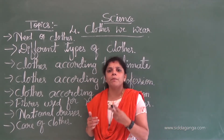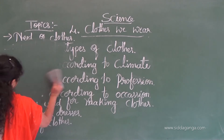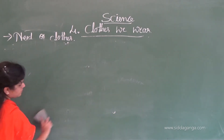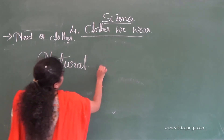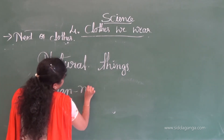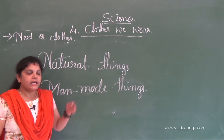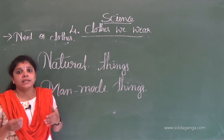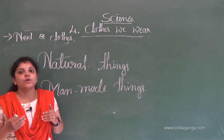We can classify all things on earth into two main groups: the first one is natural things, and the second one is man-made things. Natural things are things which are gifted by nature.